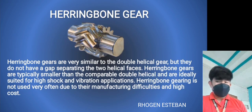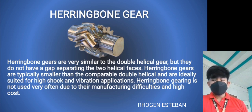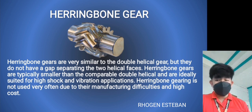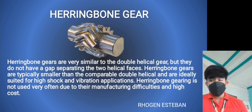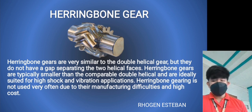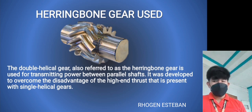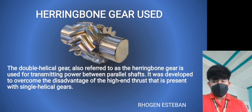Herringbone gears are very similar to double helical gears because they do not have the gap separating the two helical phases. Herringbone gears are typically smaller than comparable double helicals and ideally suited to high shock and vibration applications. However, herringbone gearing is not used very often due to manufacturing difficulties and high cost. Double helical gears, also referred to as herringbone gears, are used for transmitting power between parallel shafts and were developed to overcome the disadvantages of single helical gears.